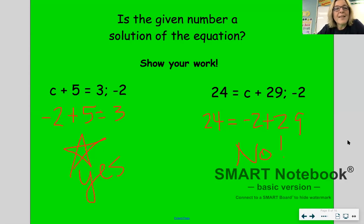So what you should have found is that the first equation, yes, is a solution to the equation. Negative 2 plus 5 does give you positive 3. But the second one is not a solution because negative 2 plus 29 does not give you 24.